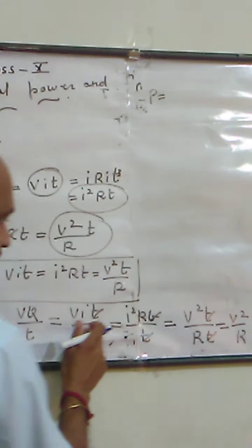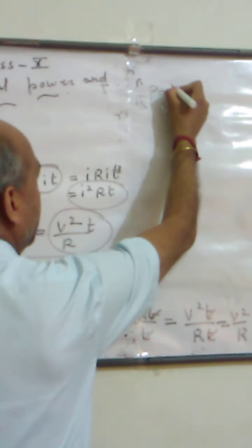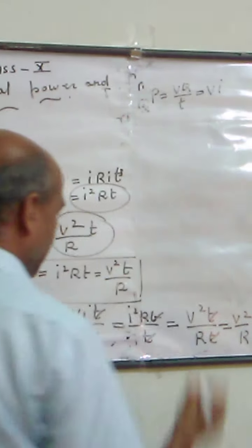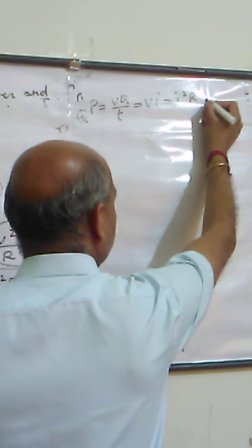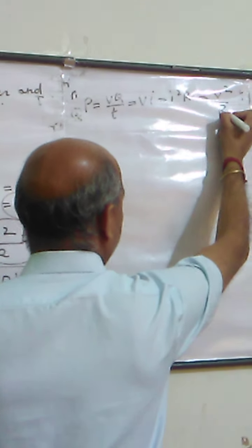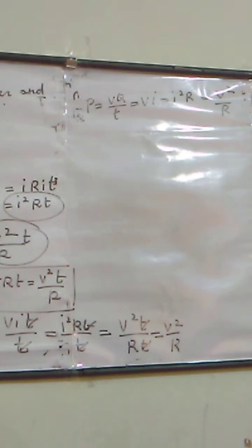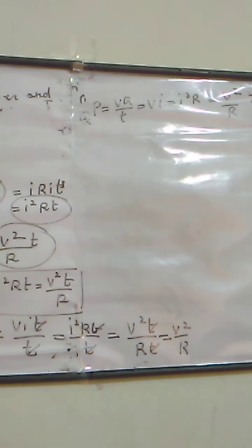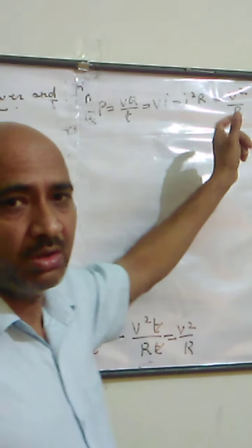So again we have four mathematical expressions for power. The first is W upon t equals VQ upon t. The second is VI. The third is I²R. The fourth is V² upon R. These are the mathematical expressions for power. Power is nothing but the rate of doing work, and by putting different values of electrical work we get these four expressions.